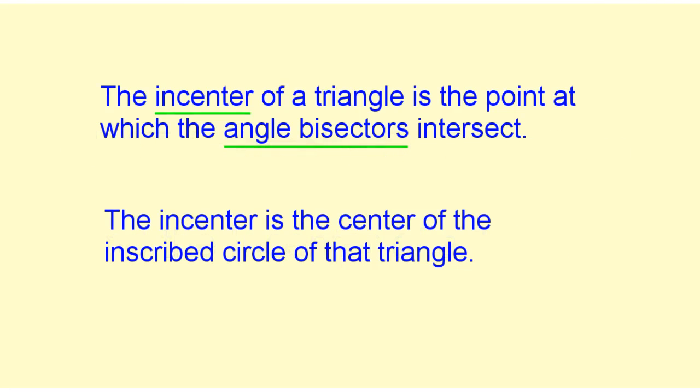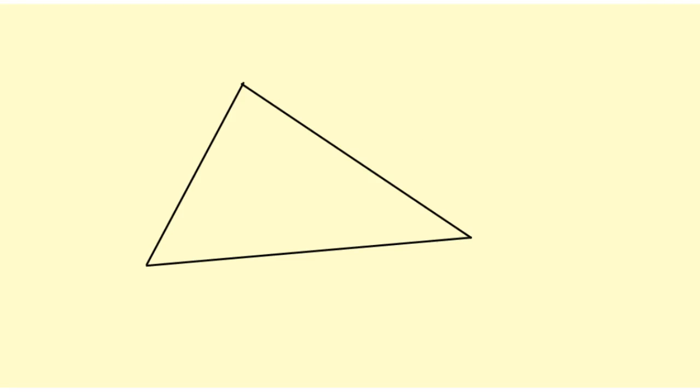The in-center of a triangle is the point at which the angle bisectors intersect. The in-center is the center of the inscribed circle of that triangle. To find the in-center of this triangle, we need to bisect all of the angles.